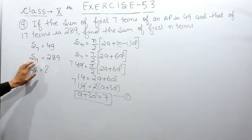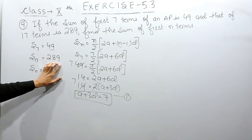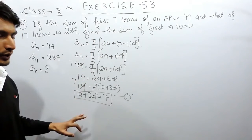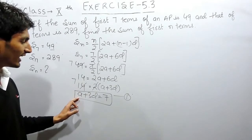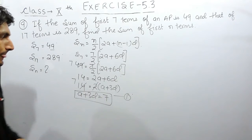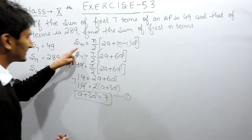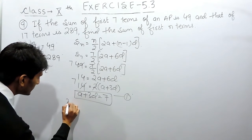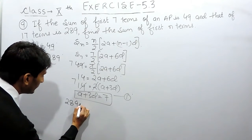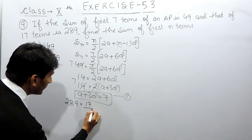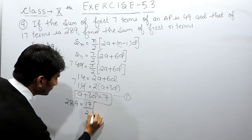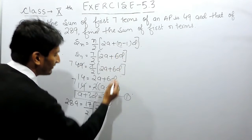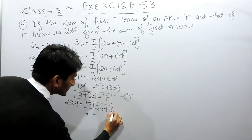Similarly, the sum of 17 terms is given. Substituting into the formula, the sum of 17 terms equals 17 by 2 multiplied by (2A plus 16D), since 17 minus 1 is 16. The sum of 17 terms is given as 289.